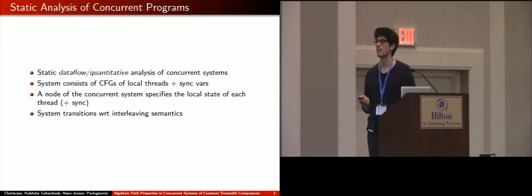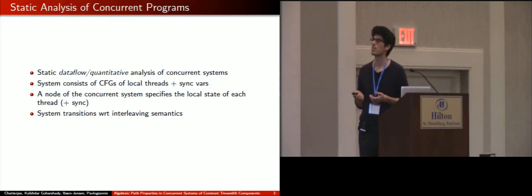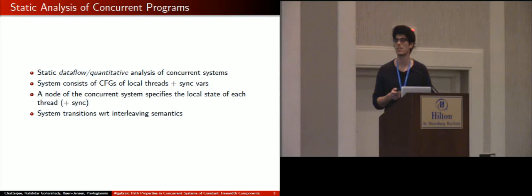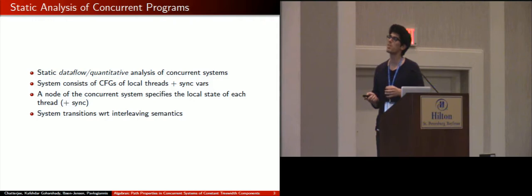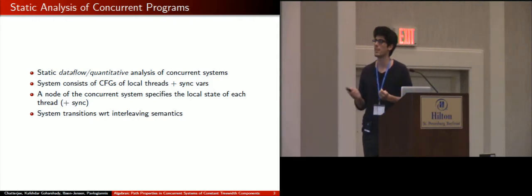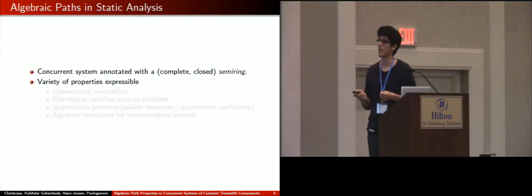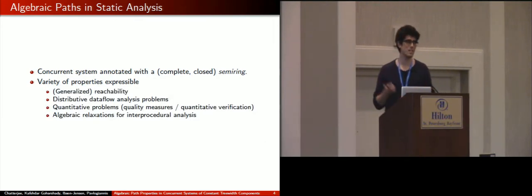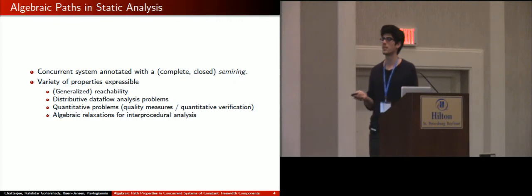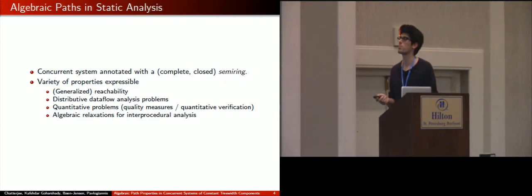Our target application domain is static data flow and quantitative analysis for concurrent systems, where a system consists of a collection of control flow graphs from the local threads, plus some synchronization variables that you might track. And a node of the concurrent system then specifies what the local state of every component is, plus the synchronization, and the whole system transitions with respect to interleaving semantics. I assume that the annotations come from a complete and closed semiring, which can be used to express a variety of properties, such as generalized reachability, distributive data flow analysis problems where the domain of the semiring is a set of flow functions, quantitative analysis problems where we use real numbers to capture quality measures or quantitative properties, and others.